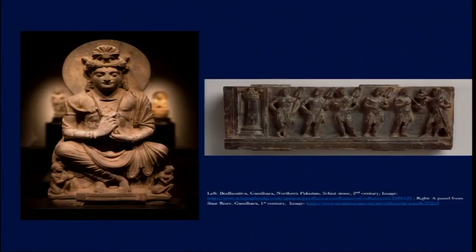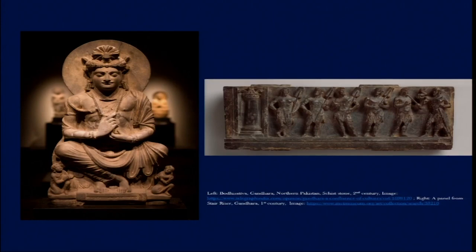Another feature found in Bodhisattva sculptures is that they are usually shown as royal figures, as opposed to the monk-like figure of Buddha — that is a major distinction between Bodhisattvas and Buddha. Here we find a high degree of naturalism, something already seen in the Mauryan period but developed further. In this case, the naturalism is slightly different from what had perhaps existed previously in the Indian subcontinent.